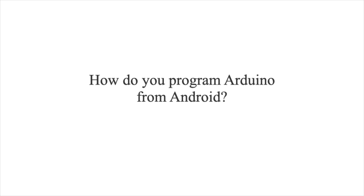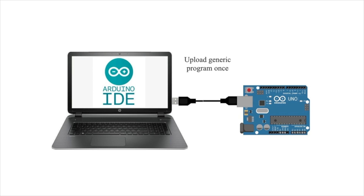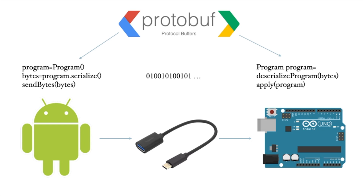The question is: how can we program Arduino from Android, as Android doesn't have any compiler? What we propose is to create a kind of generic program which will be compiled once and uploaded once into our Arduino board, and will serve as a kind of server in our setup. The global design will be something like this: in Android, after designing the setup and loop functions, we create the program instance, serialize this instance to bytes, and send the bytes via serial to the Arduino board.